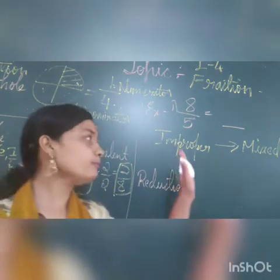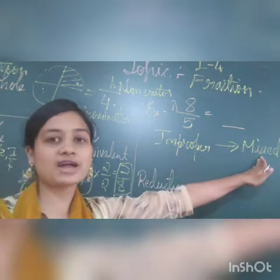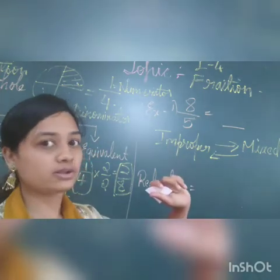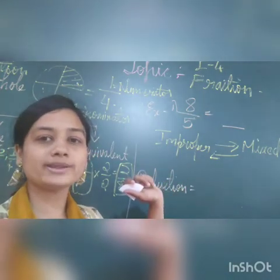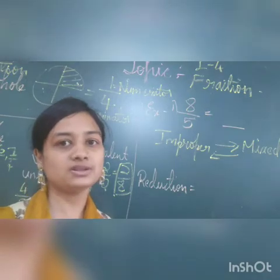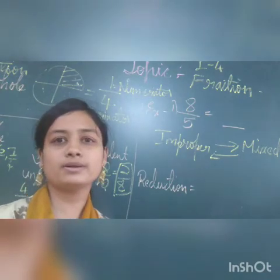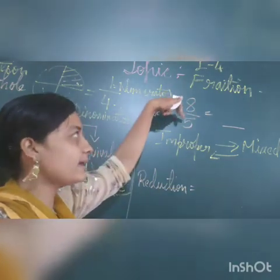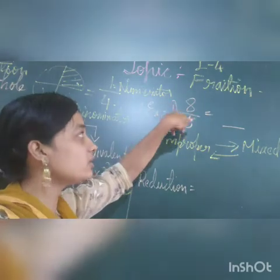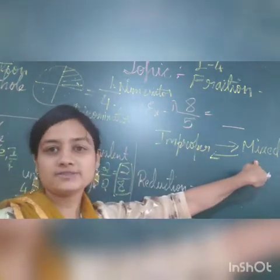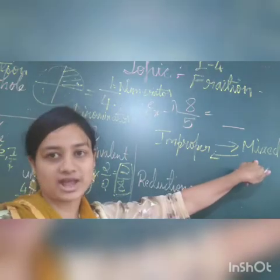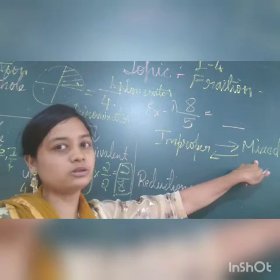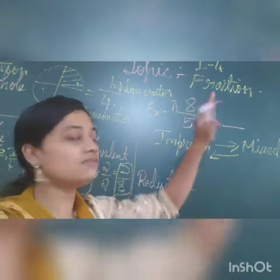Mainly we will be changing improper fraction to mixed fraction, and mixed fraction back to improper fraction. Let us recall what is improper fraction: it is a fraction where the numerator is more and the denominator is less — like 8 by 5. Now I have to convert this to mixed fraction. Mixed fraction is a whole number plus a fraction.